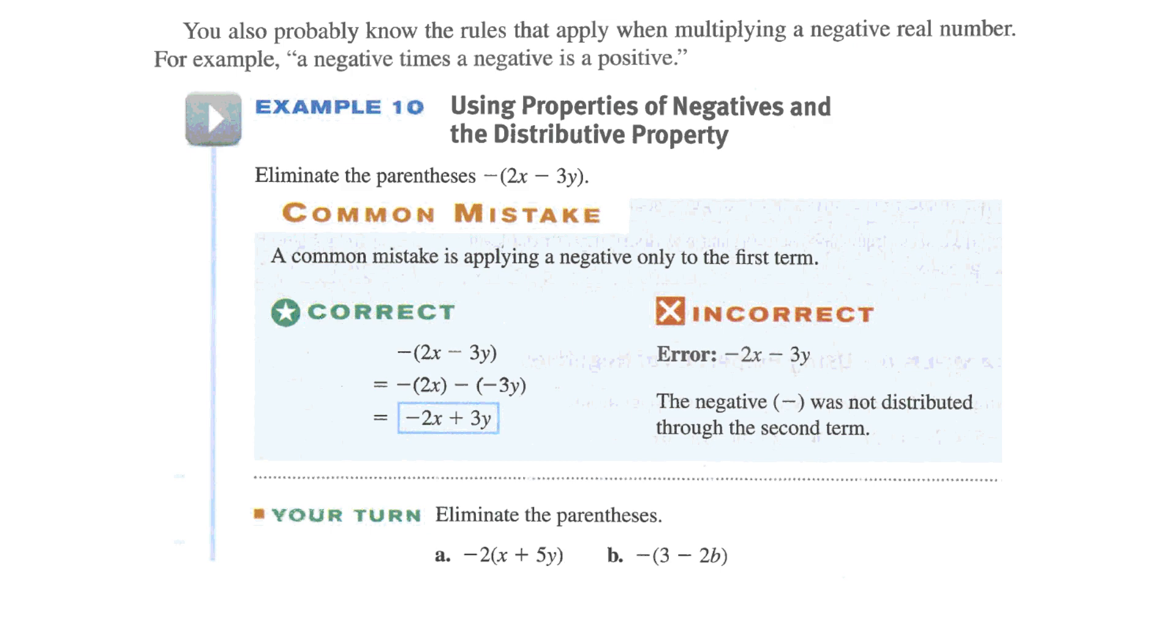Just be careful here. A common mistake when we have the negative on the outside. Distributing the negative. So what happens here? This negative gets distributed to both. So negative times a positive is a negative 2x, and a negative times the negative is a positive. So the correct answer here is negative 2x plus 3y. Very common mistake to forget about distributing that negative with the second negative and end up with negative 2x minus 3y. Just be careful there.